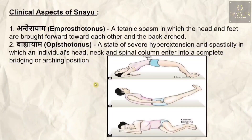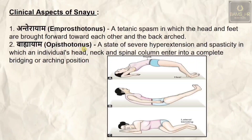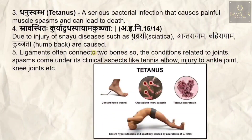Regarding the clinical aspects of snayu — the first is antaryama and bahirayama, which are types of titanic spasms. Antaryama is a condition in which the head and feet are brought towards each other in an arched-back position. Bahirayama is a state of severe hyperextension and spasticity in which the neck and spinal column enter into complete bridging arching.